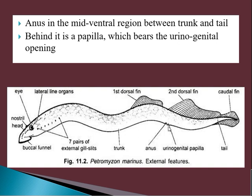The anus is located in the mid-ventral region between the trunk and the tail, through which digestive waste is discharged. Just behind the anus is a urinary papilla, and at its tip is a urinogenital opening through which both gametes and urine are discharged.